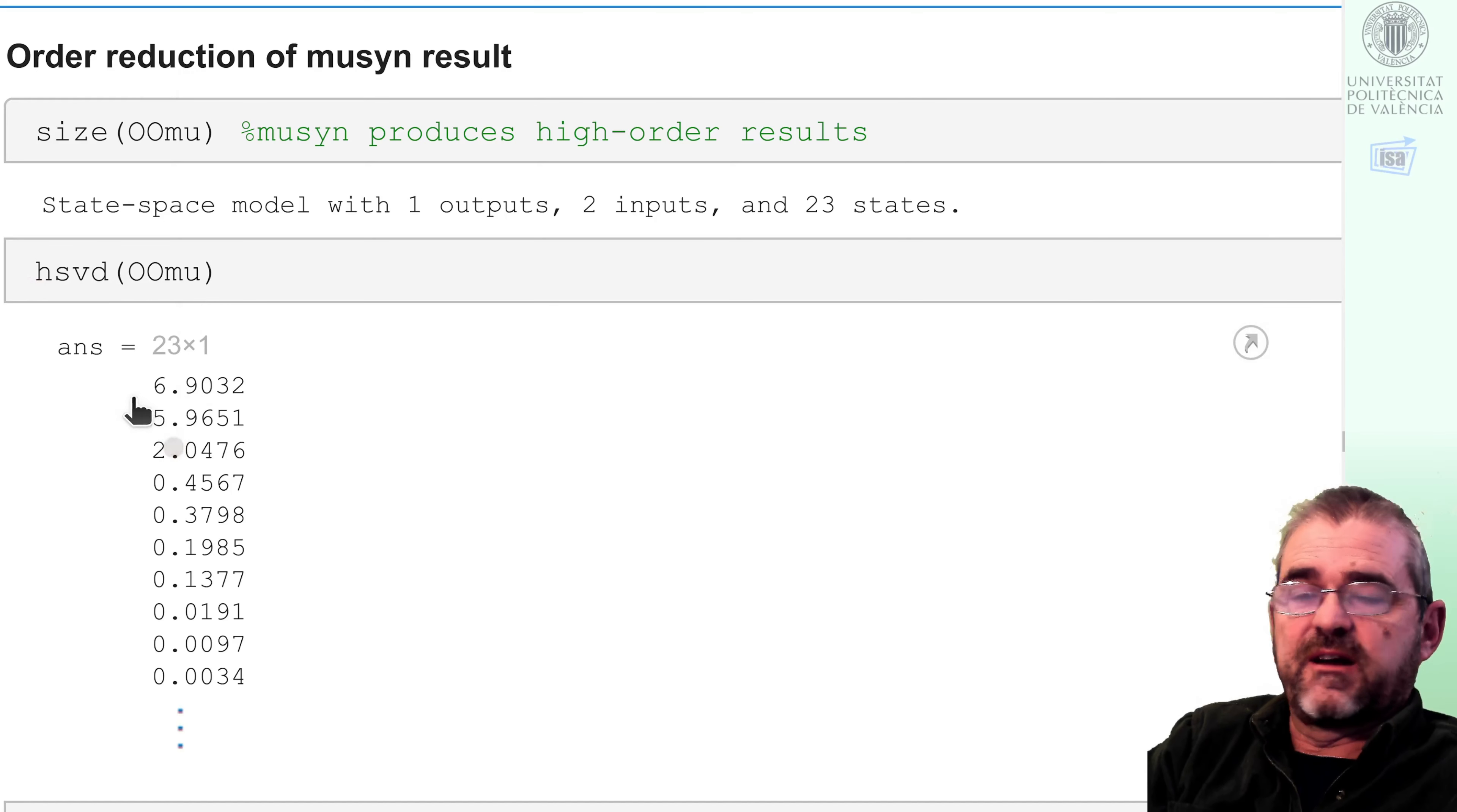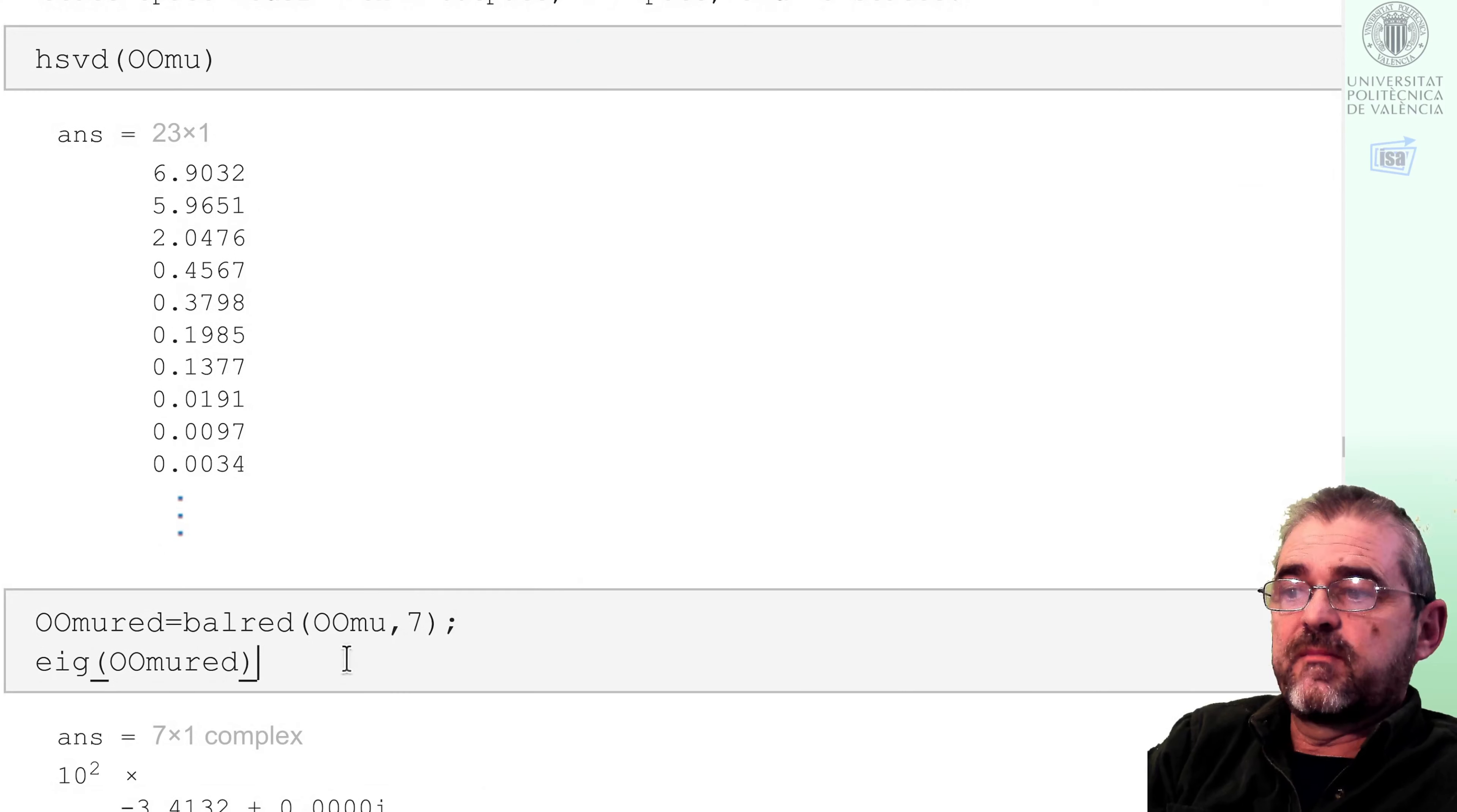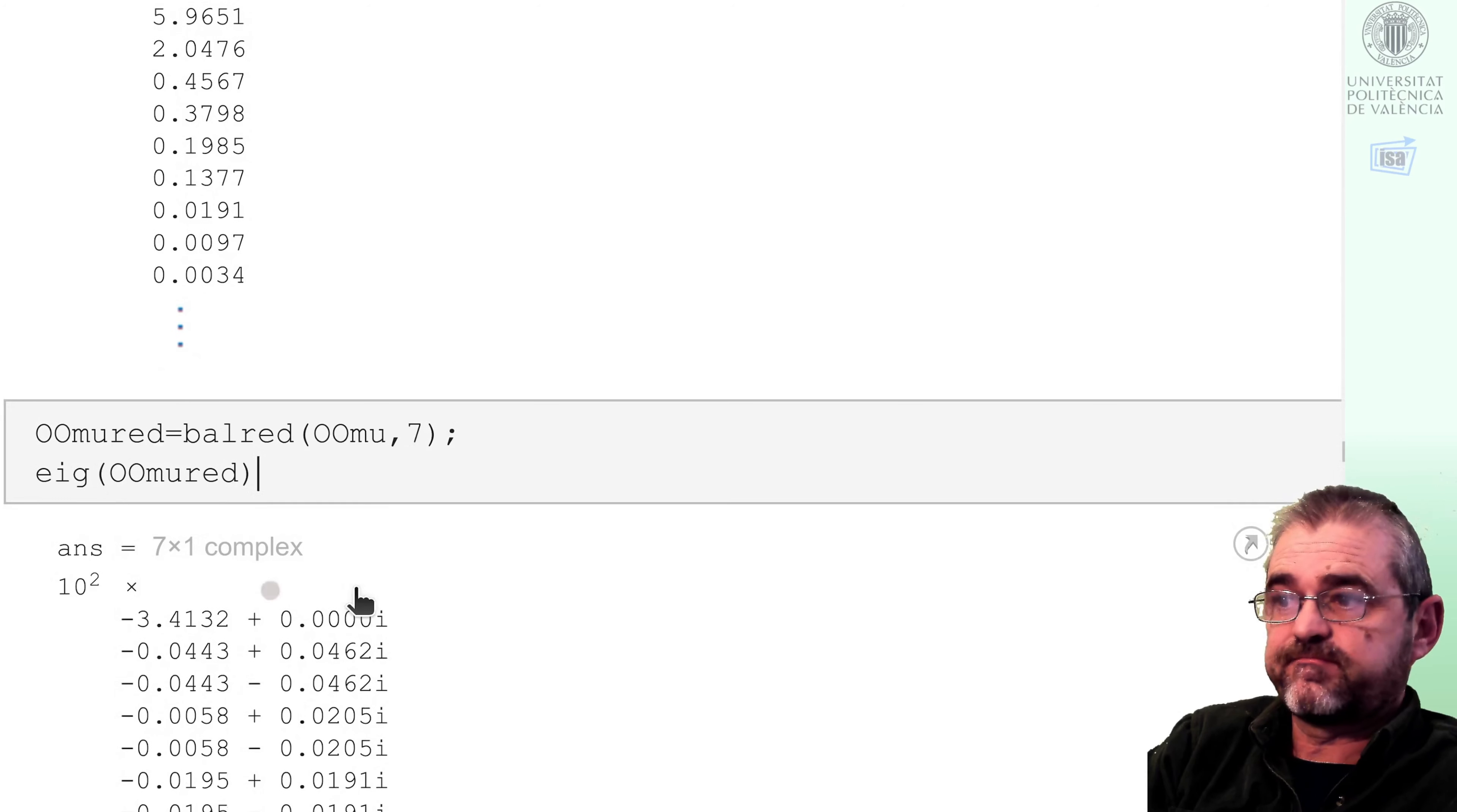So if we look for balanced reduction, the Hankel singular values of this observer are sort of 7.62. We have a couple of 0.1, but this 0.02, the eighth one, is kind of very small, so we may aim for a balanced reduction of order 7.